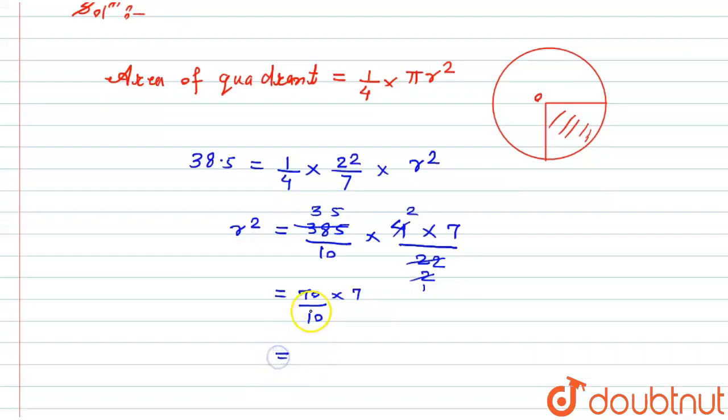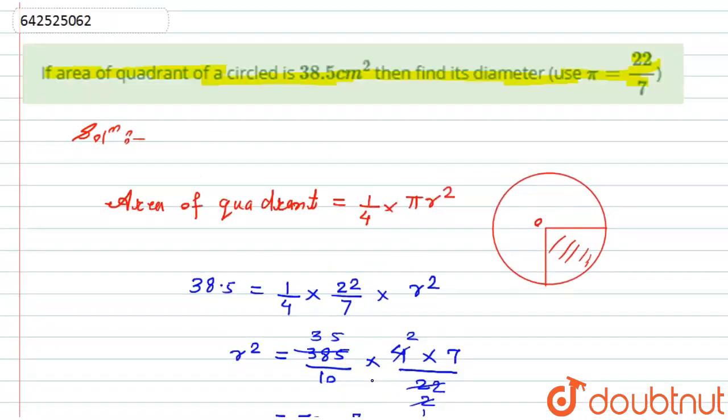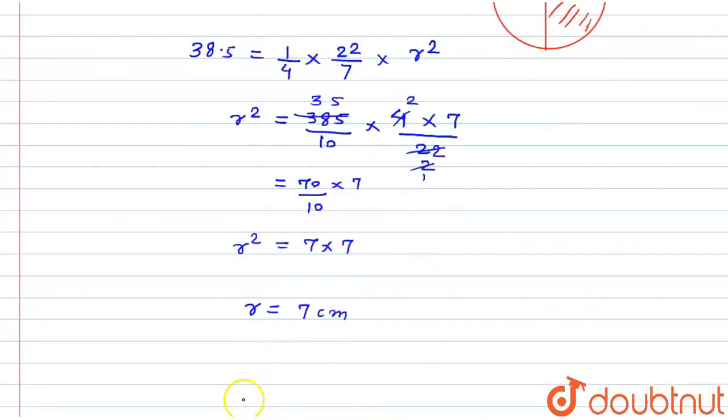Now I will simply cut this zero, so here I get 7 into 7, the value of r². 7 into 7, if I remove the square, I get the value of radius: r equals 7 centimeter.